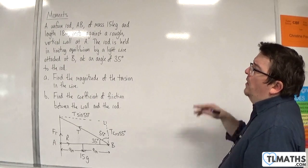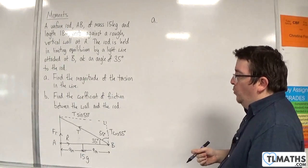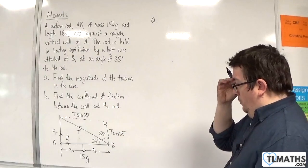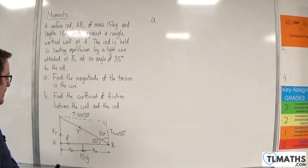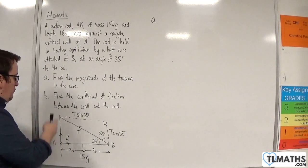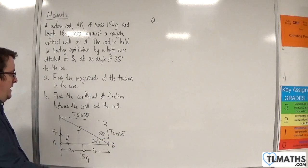Part A: Find the magnitude of the tension in the wire. Now, I can't go about resolving just yet, because I've got too many unknowns. Resolving vertically, I've got two unknowns: the friction and the T cosine 55.